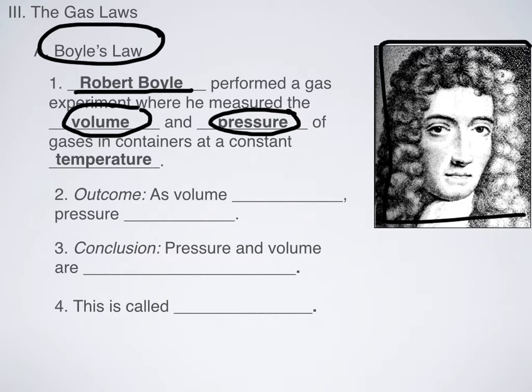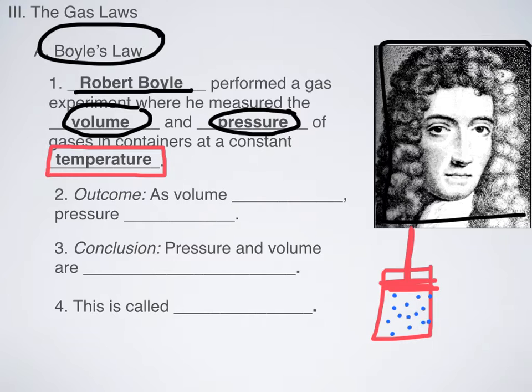In order for his experiment to work, he had to keep all of his gases at a constant temperature. So here's how you can picture it. I'm just going to do a really crappy drawing real quick. If you have a piston filled with gas, and then here's the little top part of the piston that you can push down. There is gas inside of this piston.